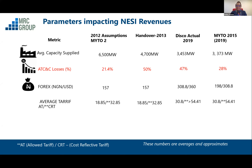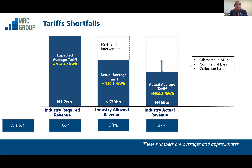What happens to that gap? The gap we're talking about is the difference between the tariff that you and I pay — which the regulator allows — and the tariff that should be, which is the cost-reflective tariff. That cost-reflective tariff covers the entire value chain: the generation cost, the transmission cost, and the distribution cost. If you look at this slide, the first bar speaks to a cost-reflective state — when tariffs are cost-reflective, you would expect a 1.2 trillion Naira revenue in a particular year.